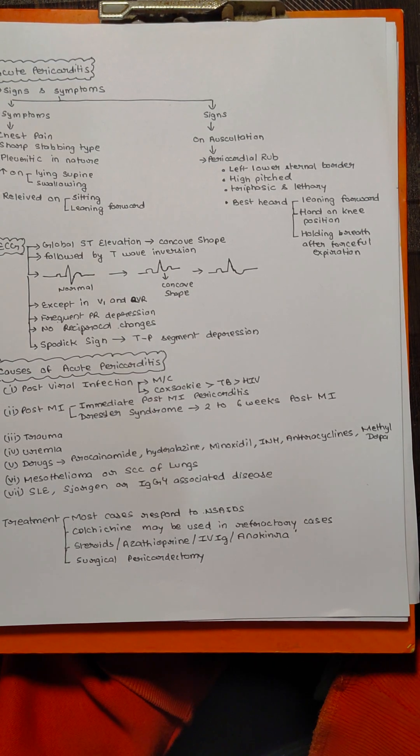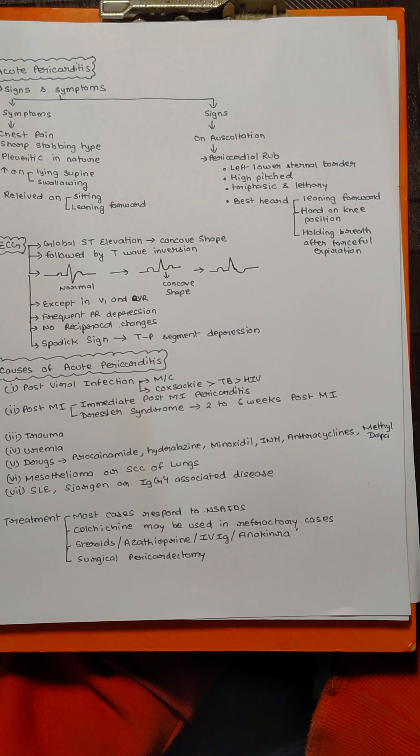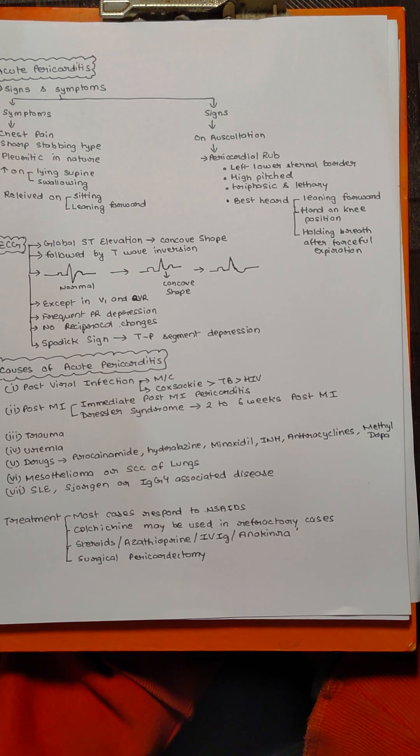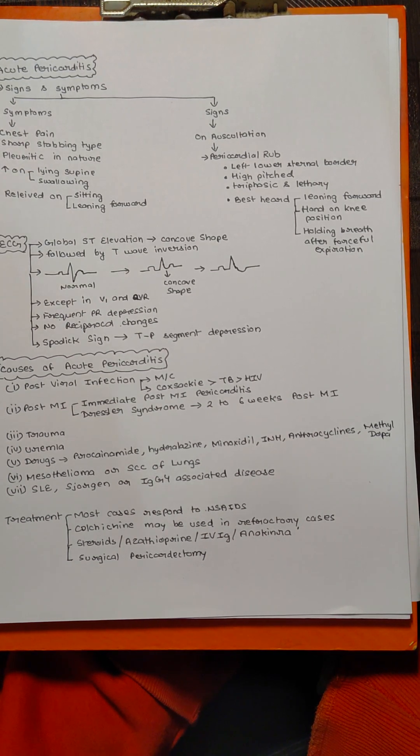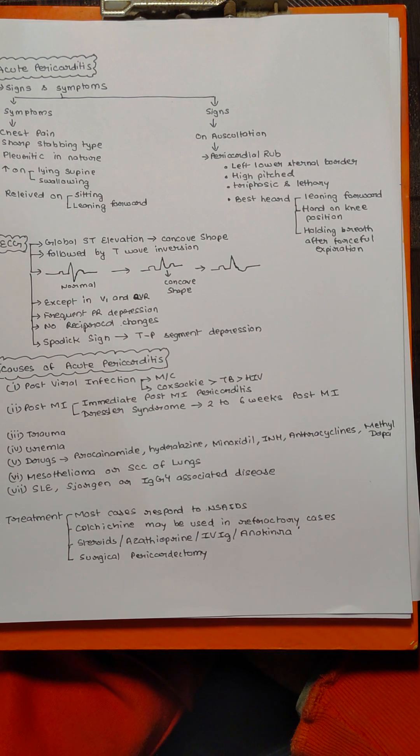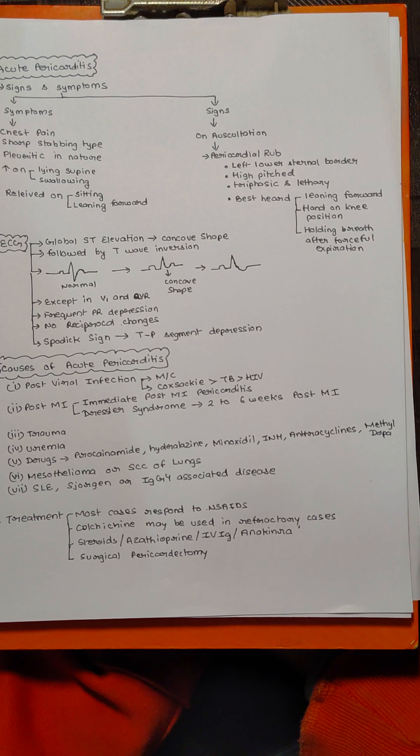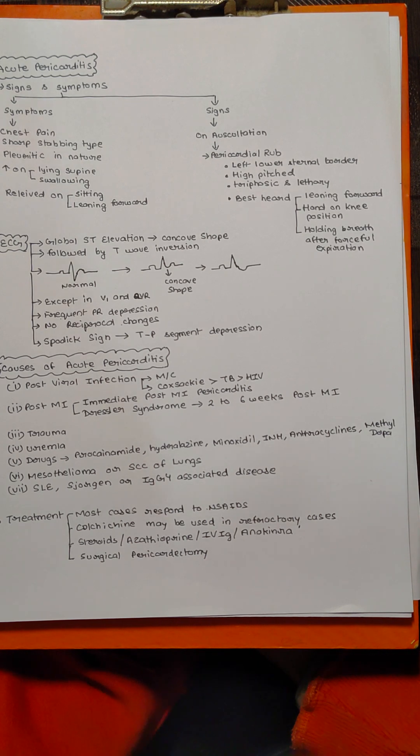If you don't know what reciprocal changes are: basically, if a patient is having inferior wall MI, the ST elevation will be there in inferior wall leads (that is 2, 3, and AVF), but it will show reciprocal changes—that is ST depression—in lead 1, AVL, and other lateral leads.